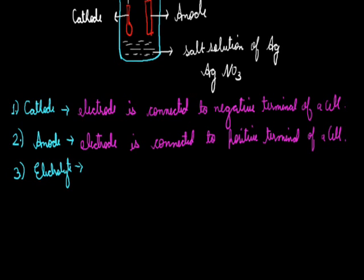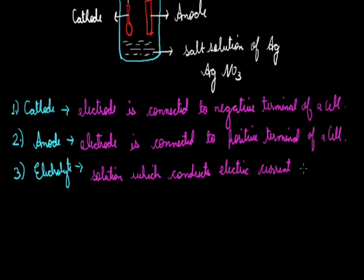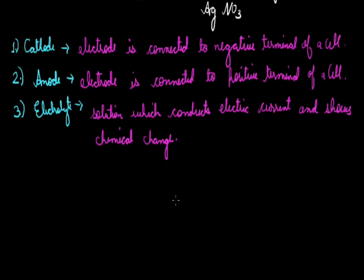The salt solution is termed as electrolyte. Electrolyte is a chemical compound which conducts electric current, and during its conduction it undergoes a chemical change. So we can define it as a solution which conducts electric current and shows chemical change. While the solutions which do not conduct electric current and do not show any chemical change are termed as non-electrolyte. Examples of non-electrolytes include alcohol, petrol, kerosene, diesel oil, and vegetable oil — these are compounds which do not show any type of chemical change or conductivity towards current.